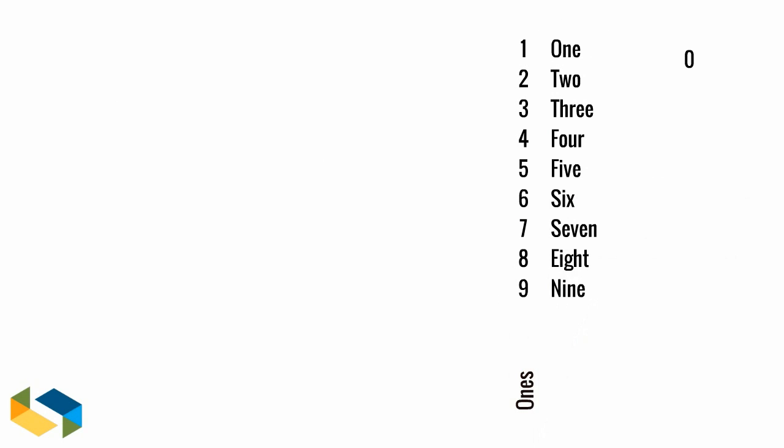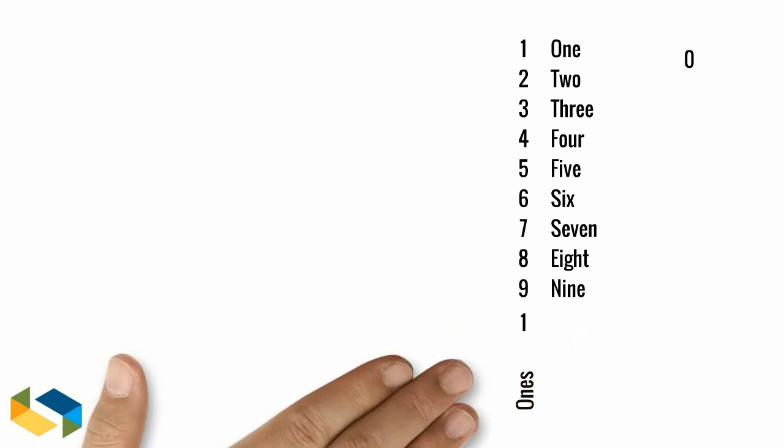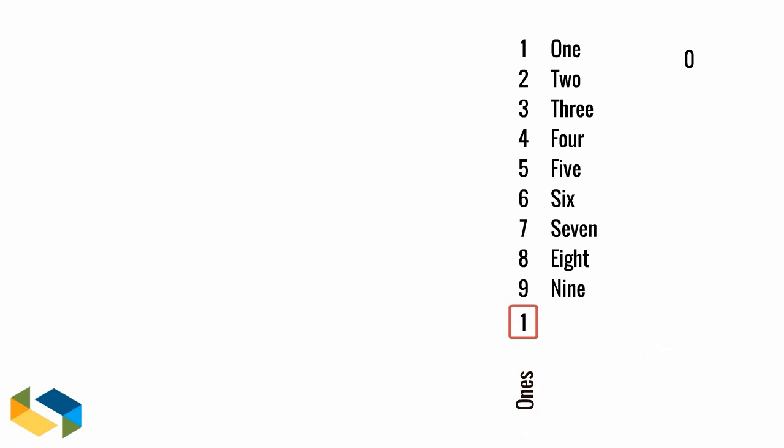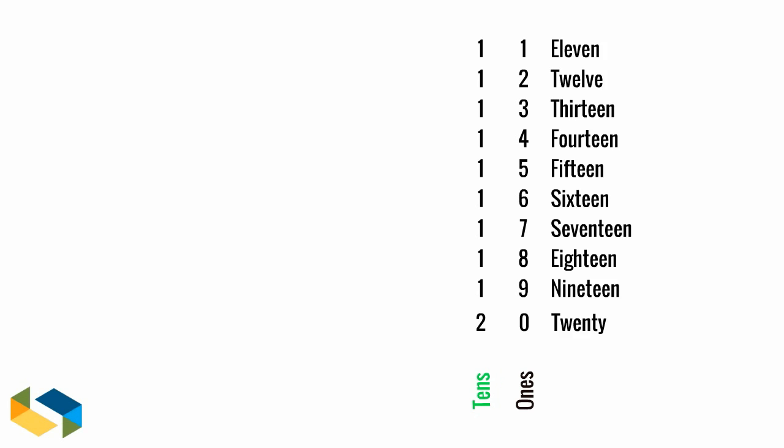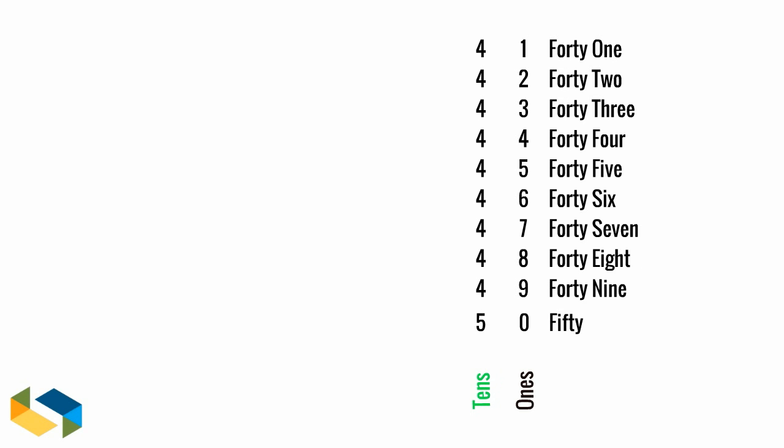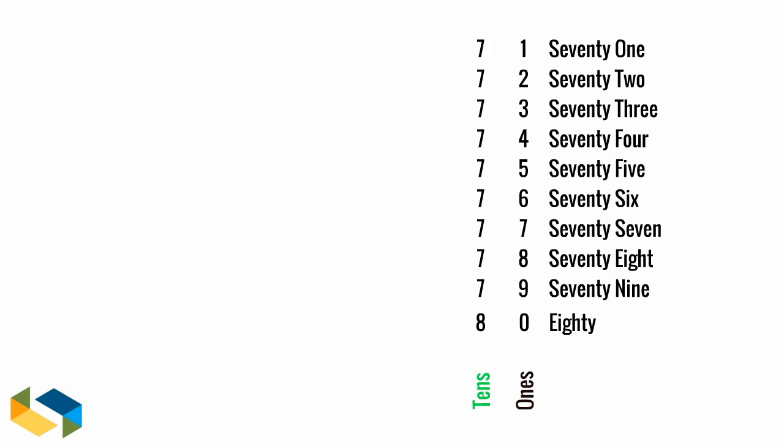When we reach the number nine we start over with one again. But just so that we don't confuse it with the digit one we used above, we move this digit one aside and keep the space blank. Blank or nothing means zero as you know, so the digit zero moves here. So we now have a combination of digits that represent the number 10. This place is hence called tens.